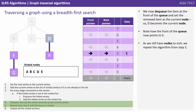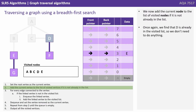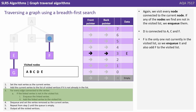We now dequeue the item at the front of the queue and set the removed item as the current node. So D becomes the current node. Note how the front of the queue is now pointing to E. As we still have nodes to visit, we repeat the algorithm once more from step 2. We add the current node to the list of visited nodes if it's not already in the list. We find that D is already in the visited list, so we don't need to do anything. Again, we visit every node connected to the current node, and if any are not in the visited list, we enqueue them. D is connected to A, C, and F. F is the only one not currently in the visited list, so we enqueue it and also add F to the visited list.